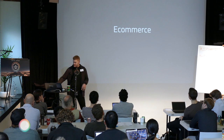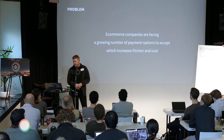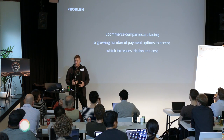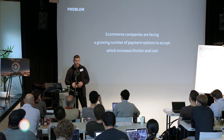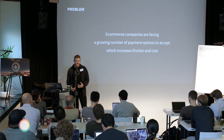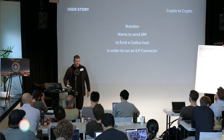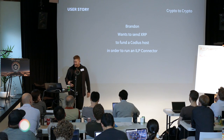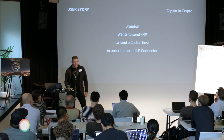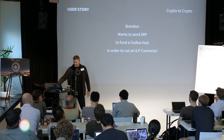The next one is e-commerce. E-commerce companies — and there are a few sitting in here actually — are facing a growing number of payment options to accept, which is really increasing friction and costs. How does an e-commerce company accept payments from anyone, anywhere, any currency, without having to support all these different payment types and plugins and everything? In this story, Brandon wants to send XRP to fund a Codius host in order to run an ILP connector. This is a kind of near-term case — you could basically do this today. It's here now, it hits home. This is a use case we can do. Let's do it tomorrow.